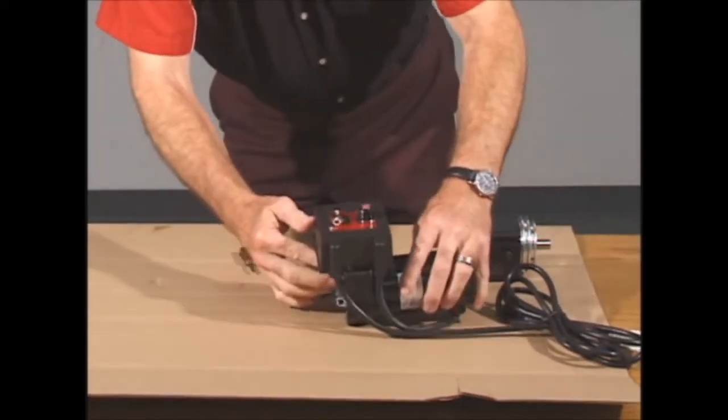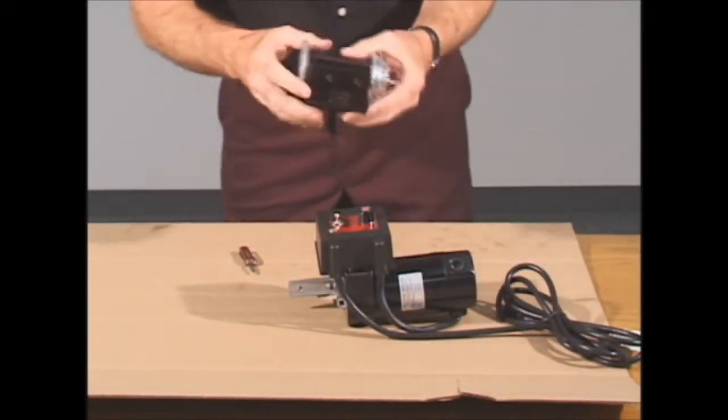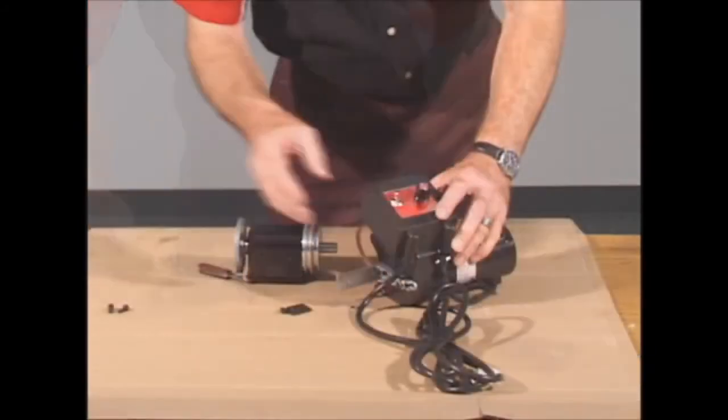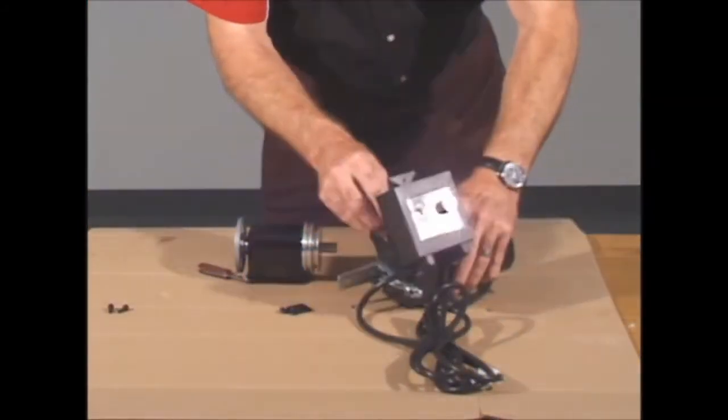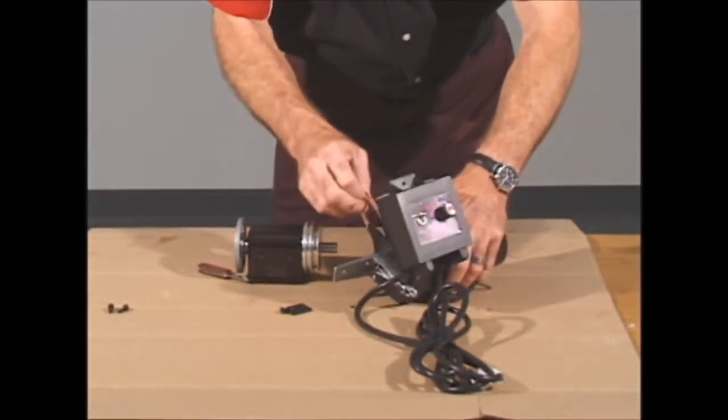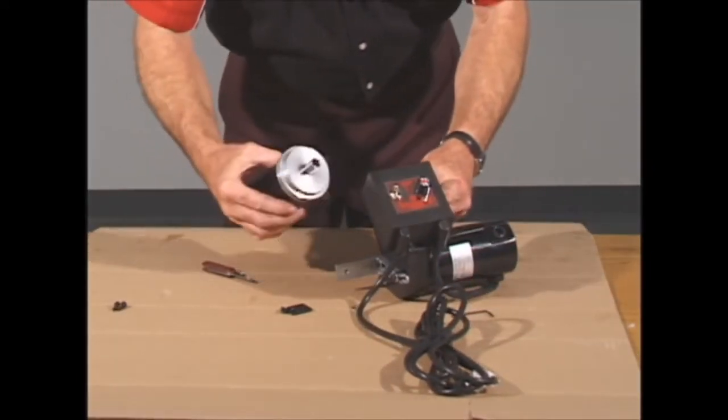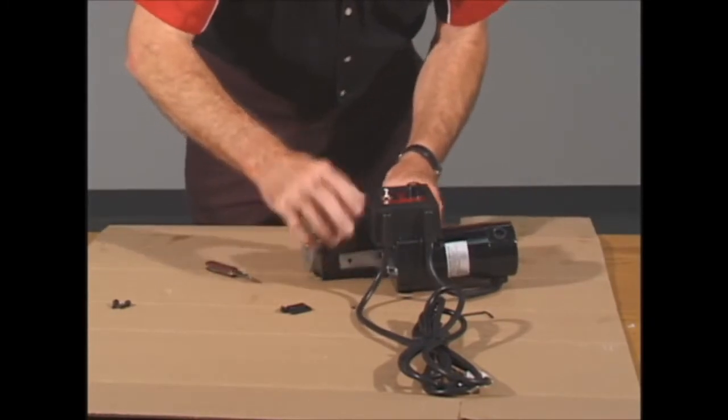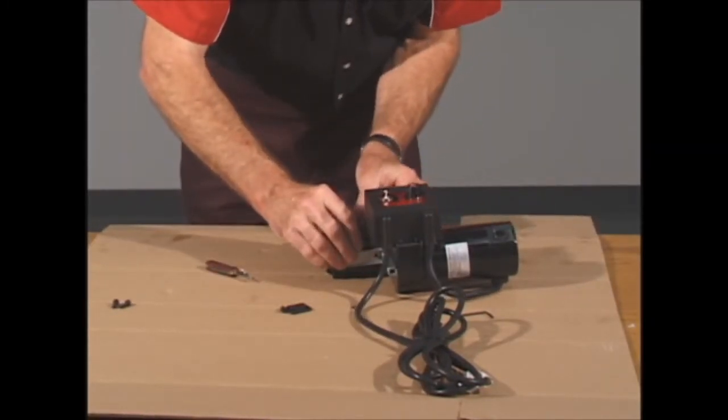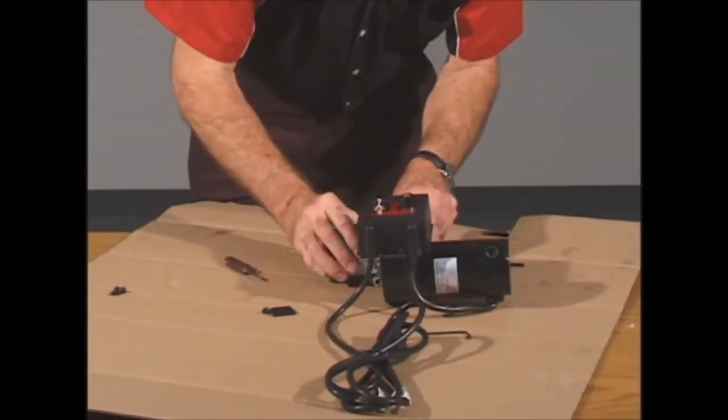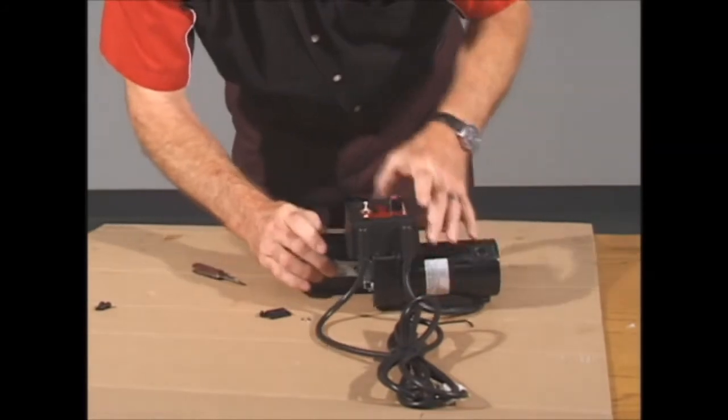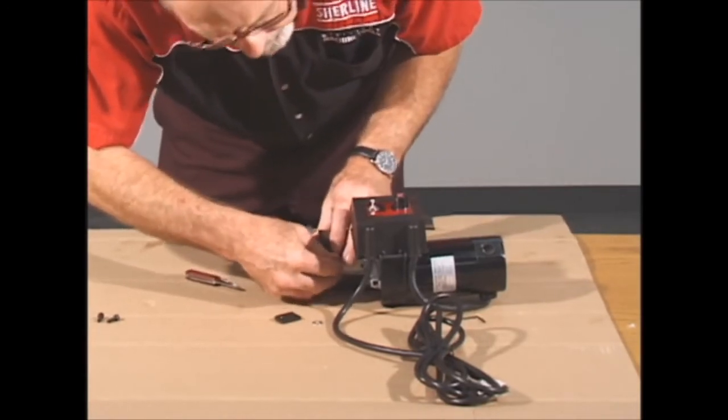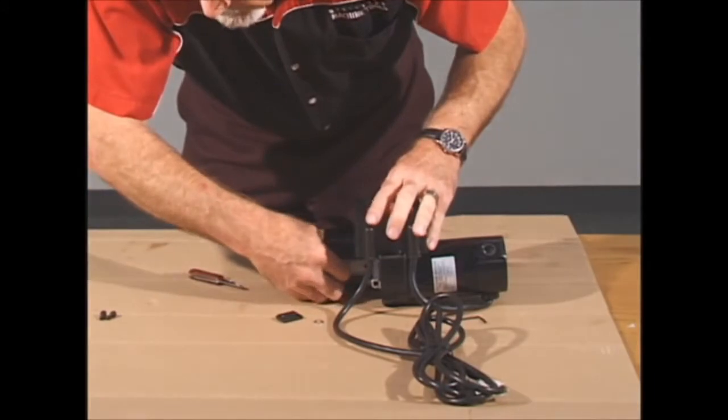The two screws that attach the bracket to the headstock are in the headstock when it ships, so just unscrew those and take them out. Next we're going to hook up the belt. For the regular position, you want to put the belt over the large diameter pulley on the motor and over the small diameter pulley on the headstock, the outer one. Let's make sure that the bracket is all the way out as far as it will go. That will allow you to get the pulley inside the belt guards and slip the belt over the pulley. The final step would be to put the two screws into the headstock and lock the bracket onto the headstock.